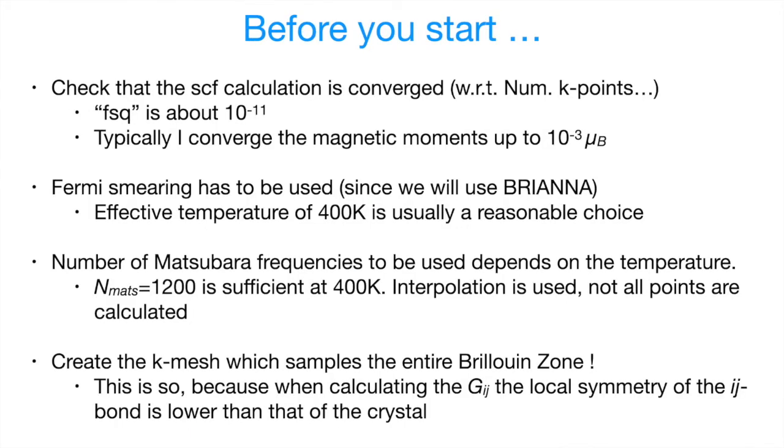So before you start the calculation, here is a little memo. First of all, when we calculate the JIJs, we have to make sure that the calculation is converged. For example, with respect to the number of k points and other parameters. So I typically try to converge FSQ down to 10 to minus 11. The good rule of thumb is that the magnetic moments should be converged up to 10 to minus 3 Bohr magneton. This is usually sufficient to get well-converged JIJs.